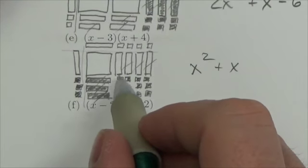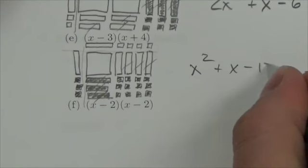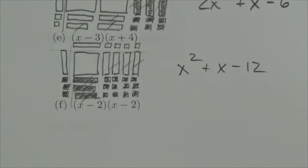And then what have I got here? 1, 2, 3, 4, 5, 6, 7, 8, 9, 10, 11, 12. 12 of those little negative units there. So that's how we represent that X squared plus X minus 12.